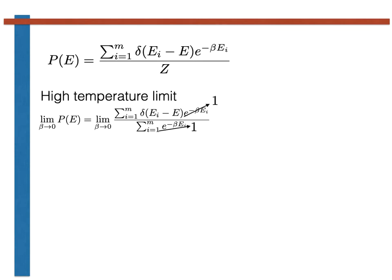We thus find that the distribution reduces to the number of states with energy E divided by the total number of microstates. In other words, in the high temperature limit, you recover the density of states.